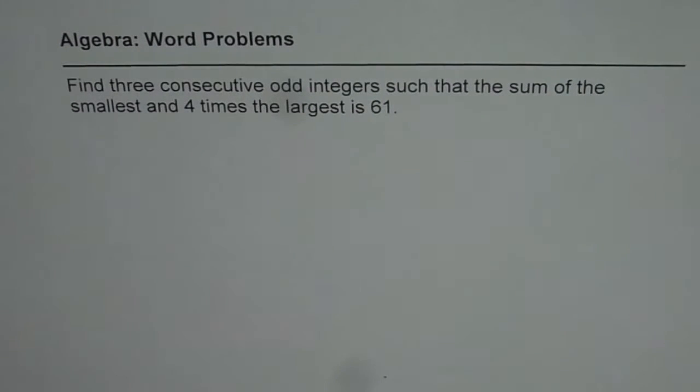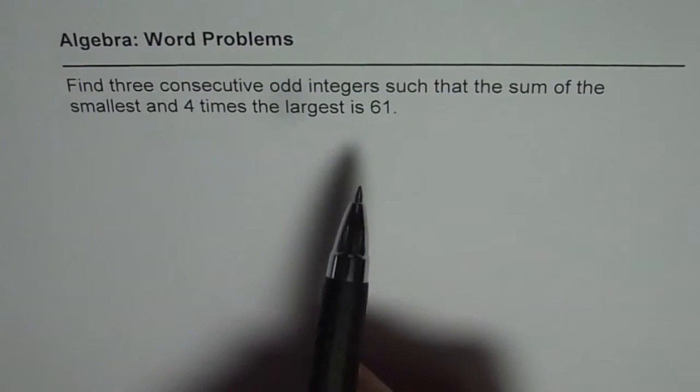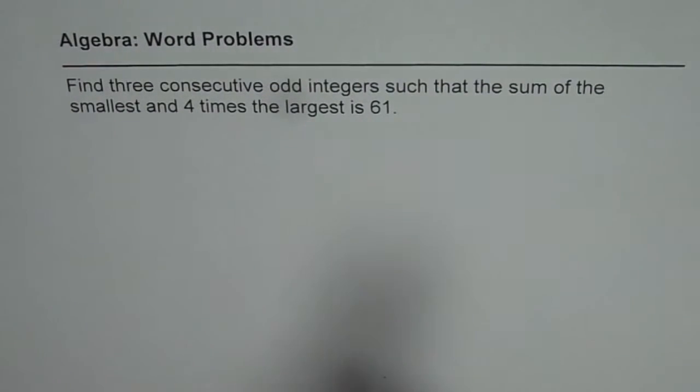Now, when we say consecutive odd integers, it is like 3, 5, 7 - every integer is plus 2. Skip 1.